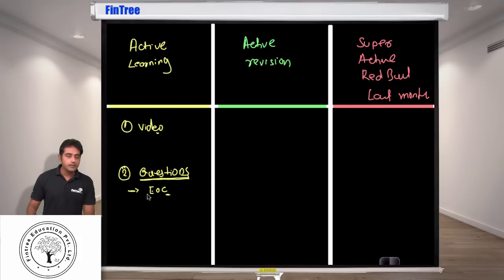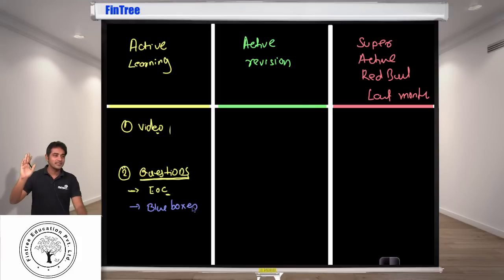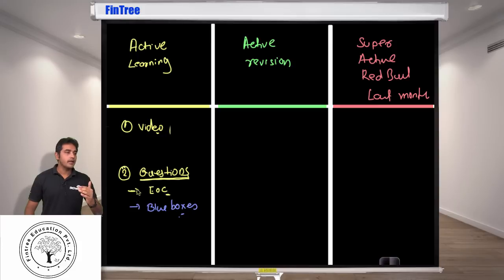Step number two: blue boxes. I don't think many of you know blue boxes - these are the examples given in CFA curriculum. These are too in-depth but the idea is that they kind of dig a level deeper than the end of chapter questions. You have to do them only once, just go through them once and then use a star mark rating system where you identify which ones you want to see for the next time and then only revise the difficult ones.